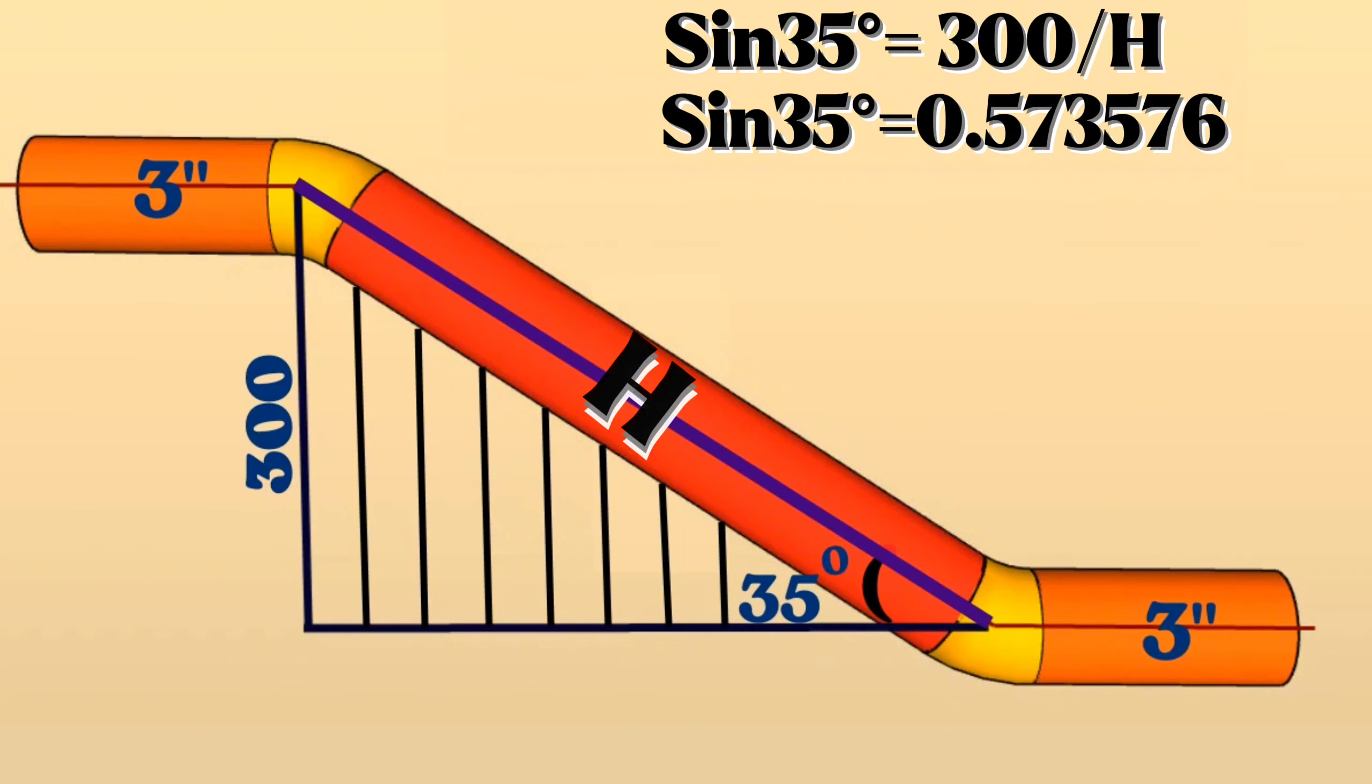Also, as per above formula sine 35 degree equals the ratio of 300 millimeters to the hypotenuse H, which is also equal to 0.573576.